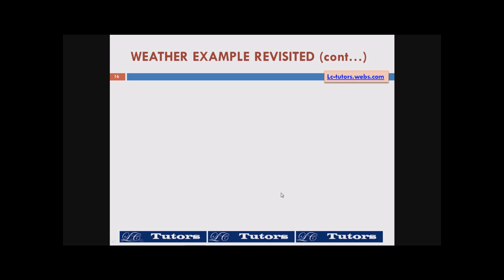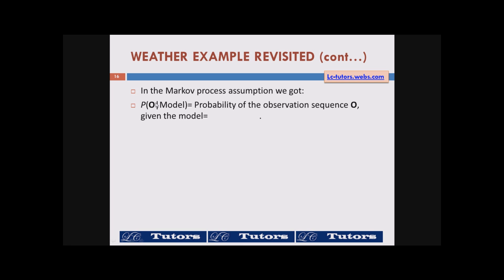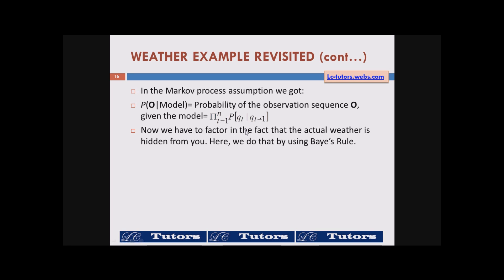We are going to model this as a Markov process — it is actually a hidden Markov model. The assumption here is that the probability of observation given the model, Qt given Qt-1, now has to factor in the fact that the actual weather is hidden from you. We modify Bayes' rule to accommodate for observations. Normally we write Bayes' rule as: P(A|B) = P(B|A) × P(A) / P(B). In this case, B is the observations, so we ask: given an observation, what is the probability of being in any of the states?